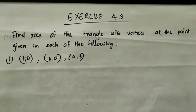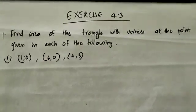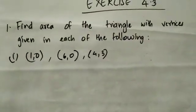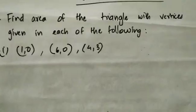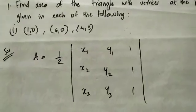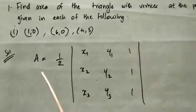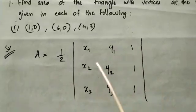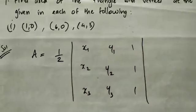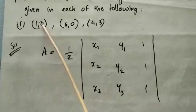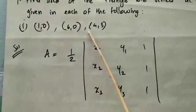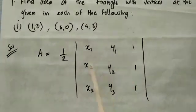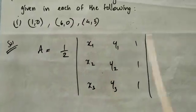Exercise 4.3, first question: Find the area of the triangle with vertices at the given points. Using determinants, the formula for area is: Area = ½ |x1 y1 1 / x2 y2 1 / x3 y3 1|. We substitute the coordinates into this formula.